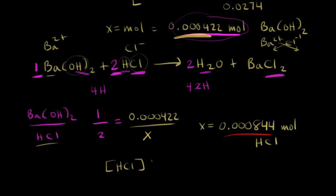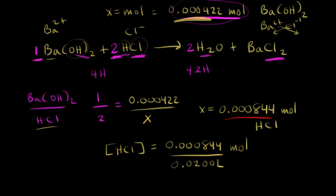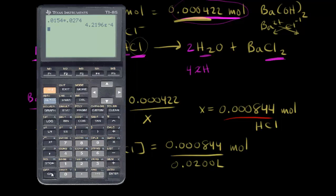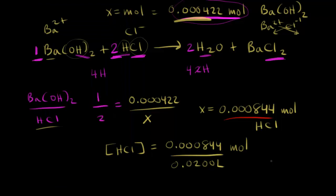So the concentration of HCl in our original solution would be, we had 0.000844 moles, divide that by liters. That was 0.0200 liters. 20 milliliters is equal to 0.0200 liters. And so we can do our calculation here. So we can take 0.000844 and we can divide that by 0.0200. And we get for our answer here 0.0422 molar. So the concentration of HCl is equal to 0.0422 molar. And we are finally done. That's our concentration of our acid solution.